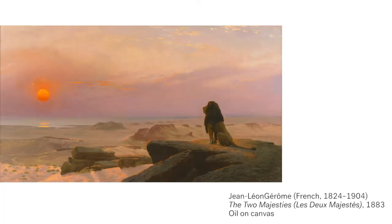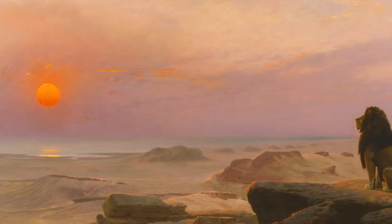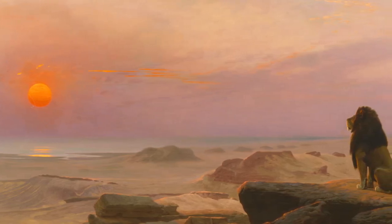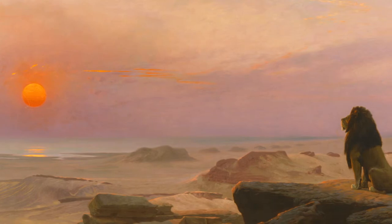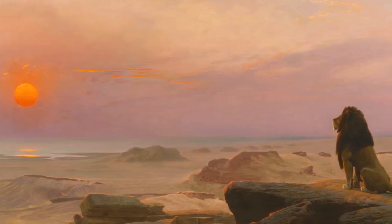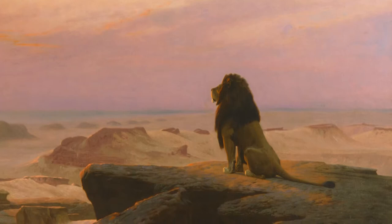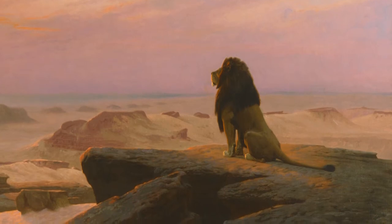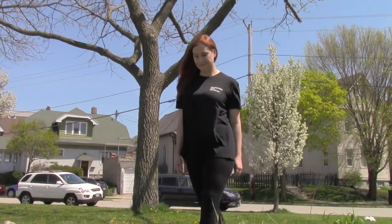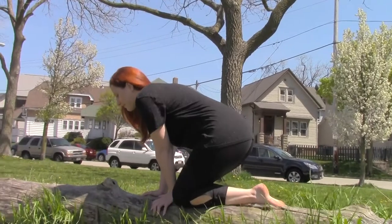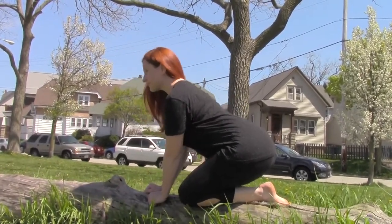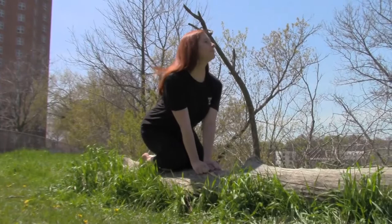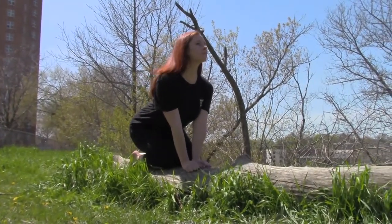We are going to use movement and our imaginations to take a trip inside this painting. The title of this painting is The Two Majesties. Majesty means impressive beauty or dignity. Who do you think the two majesties are? One of them is the lion sitting on the rock. I think he looks strong and dignified. Find a space in your room to sit like the lion. Try sitting on your heels while you put your hands on the ground in front of you. Stretch your spine long and tall and look out over your home.